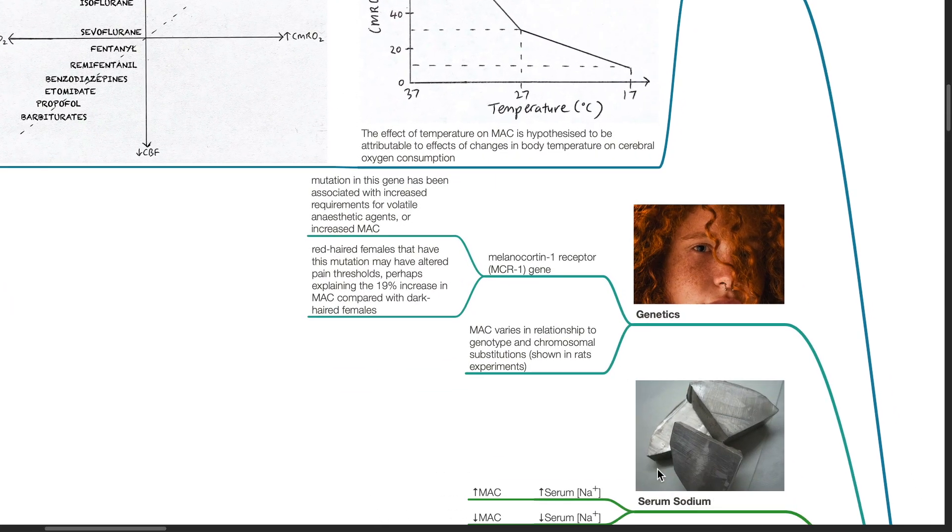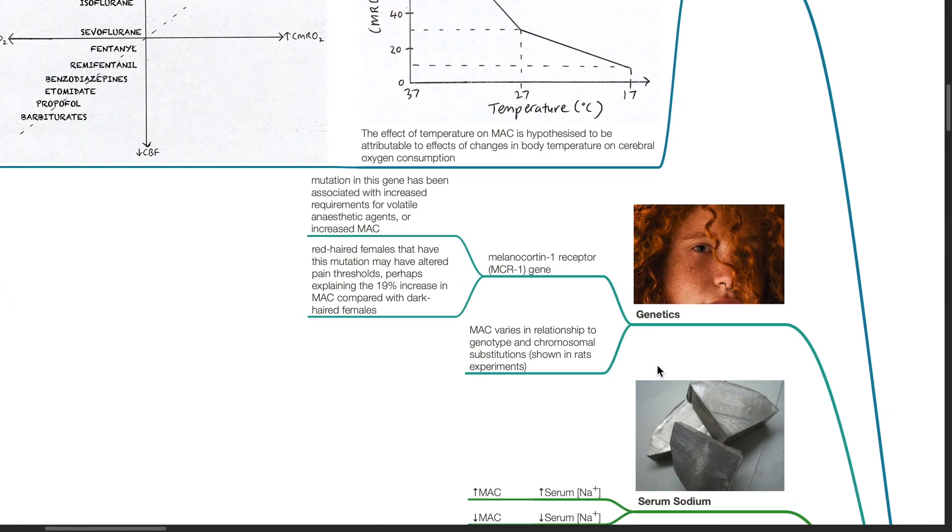Genetics: the melanocortin-1 receptor gene, MCR1 gene, mutation has been associated with increased requirements for volatile anesthetic agents or increased MAC. Patients with this mutation are red-haired females with freckles. They may have altered pain thresholds and perhaps this explains the 19% increase in MAC compared with dark-haired females. MAC varies in relationship to genotype and chromosomal substitution shown in red experiments.